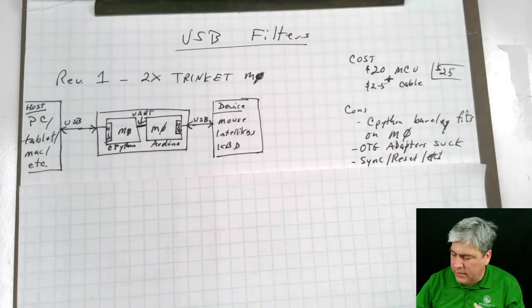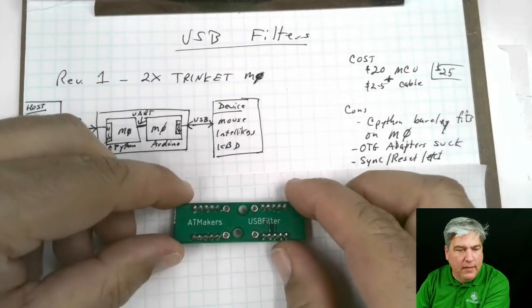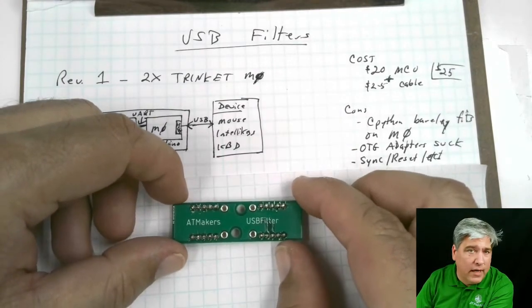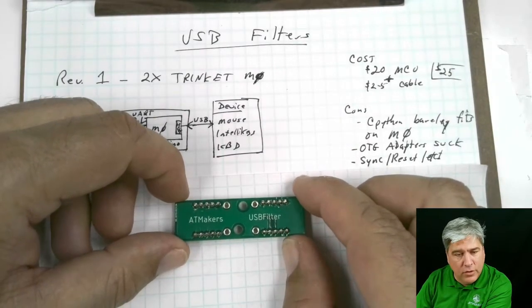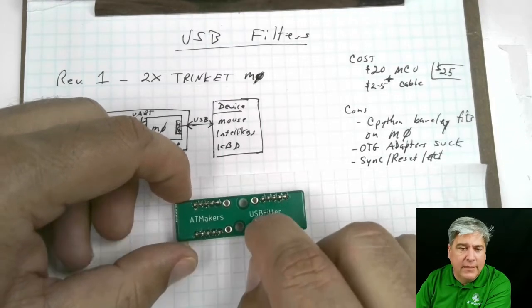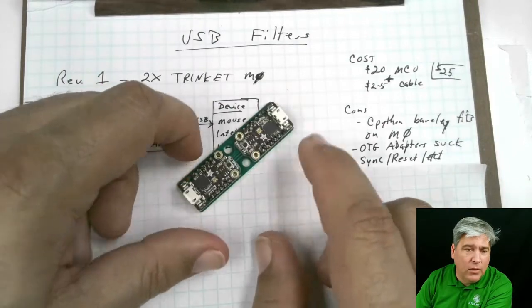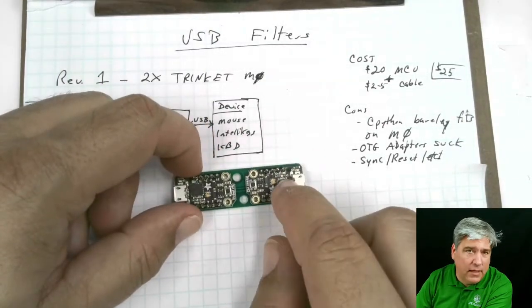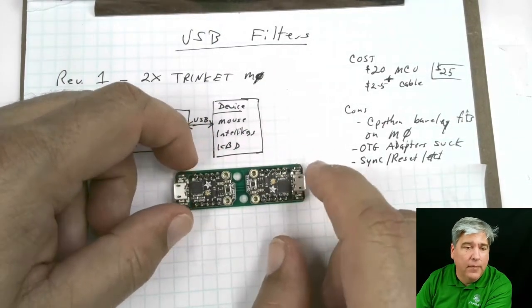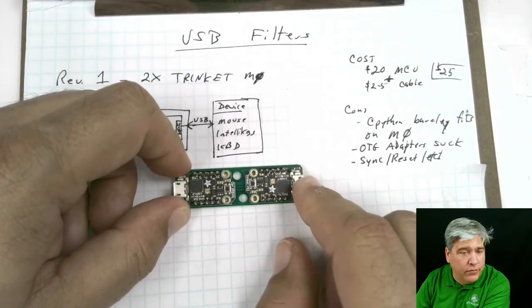When we first made this, this is the actual board that lives inside of that adapter you saw. And you'll notice it doesn't say IntelliKeys adapter. It says USB filter. So this device actually can do a lot more than just IntelliKeys adapting. It can do a lot of different kinds of filtering.